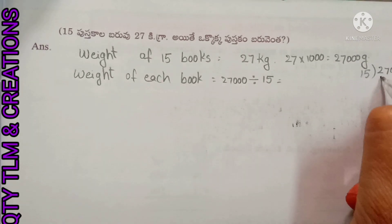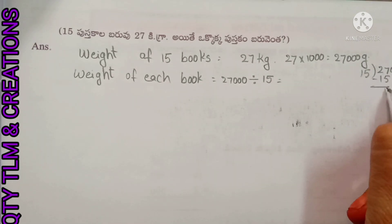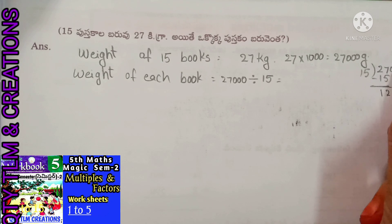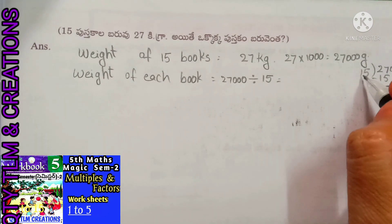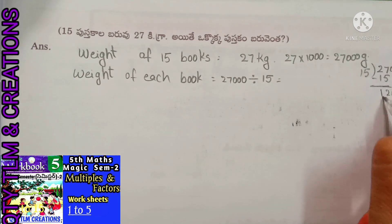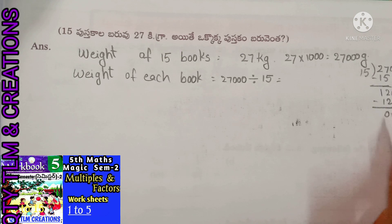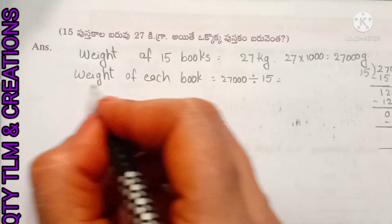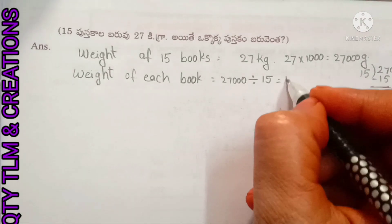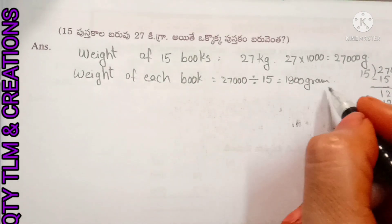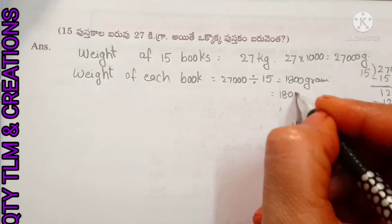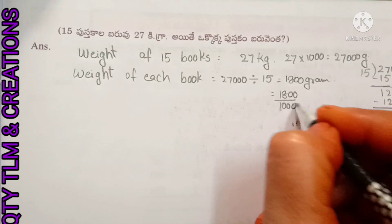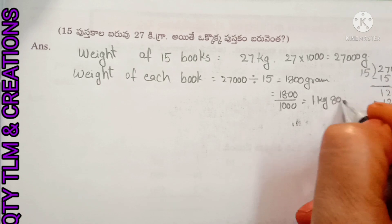15 goes into 27 once; subtract 15 from 27, we get 12. Bring down 0: 15 goes into 120 eight times; 15 × 8 = 120, remainder 0. Bring down 0: 15 goes into 0 zero times. So weight of each book equals 1800 grams. Converting to kilograms: 1800 ÷ 1000 = 1 kilogram 800 grams.